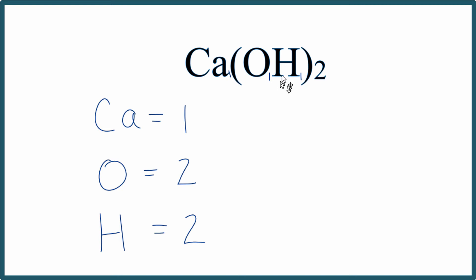So if we wanted to know how many oxygen atoms were in one mole of calcium hydroxide, we take this two, multiply that by Avogadro's number, 6.02 times 10 to the 23rd. And we'd see that for one mole of calcium hydroxide, we have 12.04 times 10 to the 23rd oxygen atoms.